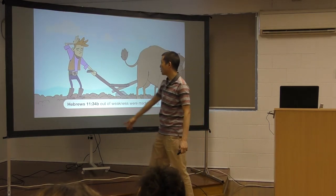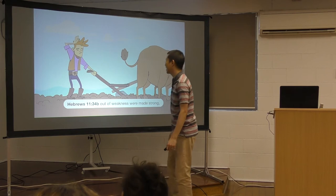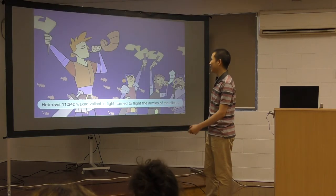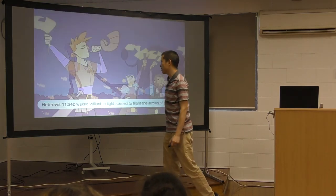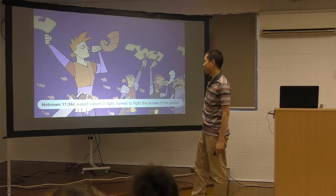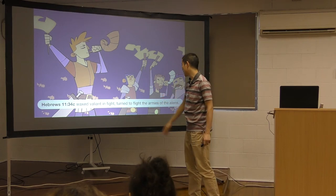Out of weakness were made strong. This is Gideon. He's threshing and he's hiding from the Midianites. Waxed valiant in fight. So remember, through faith, he was used of God. And he led 300 into battle, turned to flight the armies of the aliens.